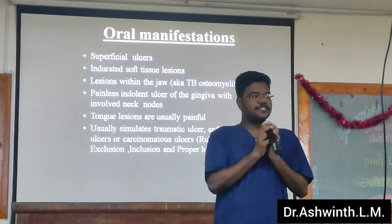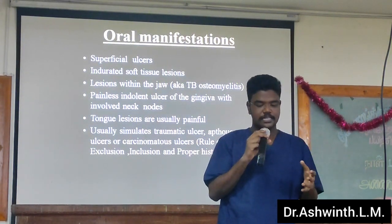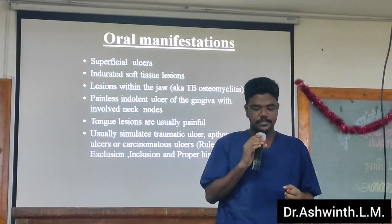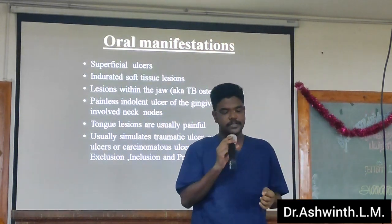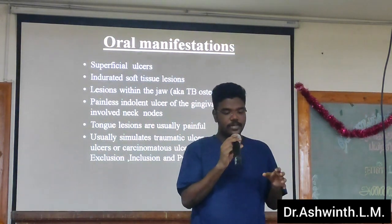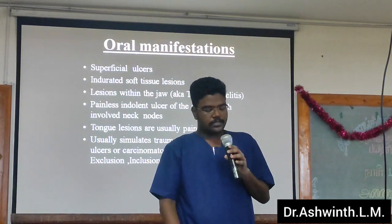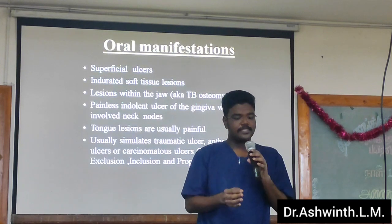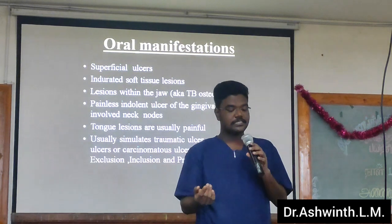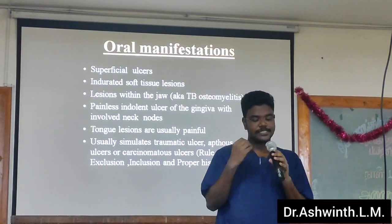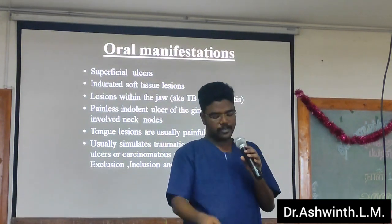As dentists, oral manifestation of tuberculosis is very important. It can occur as a superficial ulcer, or it can be in the soft tissue, or sometimes it can be within the jaw, which we call tuberculous osteomyelitis. It can be a painless, indolent ulcer of the tongue or involve lymph nodes. The problem is that tuberculosis can simulate a traumatic ulcer or aphthous ulcer. So we must arrive at the diagnosis either by incision, excision biopsy, and a proper tissue examination.